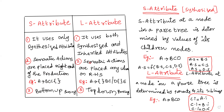But what about L-Attribute? Semantic actions are placed anywhere on the right-hand side. You see, A tends to BC, but the action is placed at the starting of the production. There are also two values D and E where semantic actions are placed anywhere on the right-hand side — at the start, or in the middle of the production. This is called as L-Attribute.